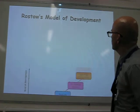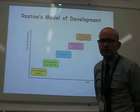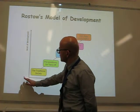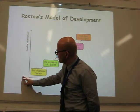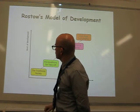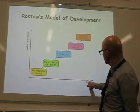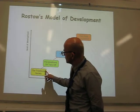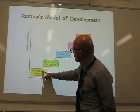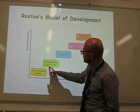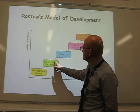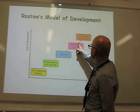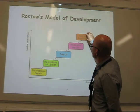Rostow's model of development is something you will need to know for the exam. It measures the level of development from an emerging developing country through to advanced countries on the y-axis, over time along the bottom. It looks at society starting off on a tribal traditional basis, moving to a position where they have what's needed to take off, move into the industrial period, and then start to consume products.